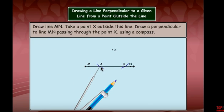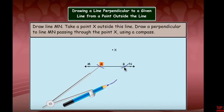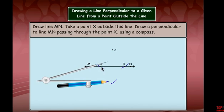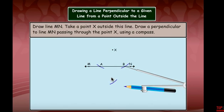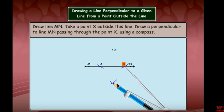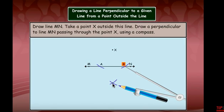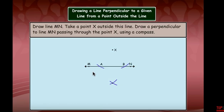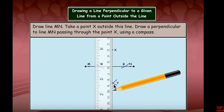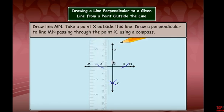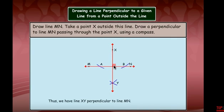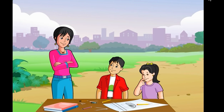Place the compass point at A and draw an arc below the line, then place the compass point at B — without changing the span — and draw another arc. The intersection of these two arcs gives a new point. Take a scale, name this point Y, and draw a straight line through X and Y. So XY is perpendicular to line MN.